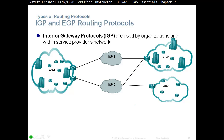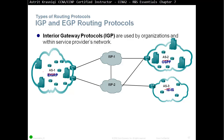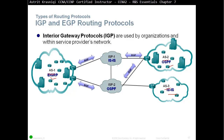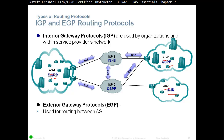Interior gateway protocols are used by organizations and within service provider networks. Organizations are known by autonomous system numbers, which are purchased — they are not free. Each company or ISP will have an AS number. Within an AS or within a company, we can run interior gateway protocols like EIGRP, OSPF, ISIS, and so on. ISPs can also have their own interior gateway protocols. Between two different companies or two ASs, we run exterior gateway protocols like BGP, which is used for routing between ASs and is the official routing protocol used by the internet.